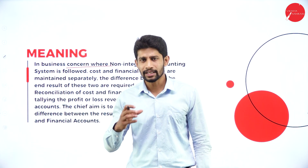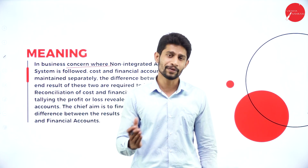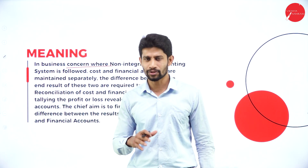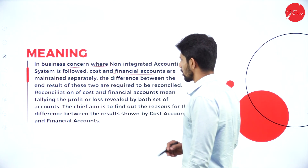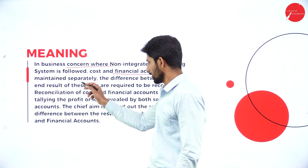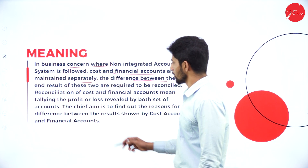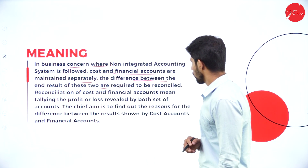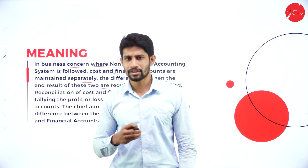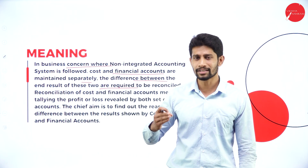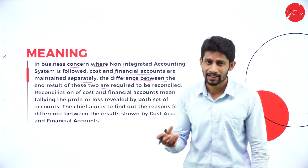For example, if you are maintaining a cost book, the cost book will be different. If you are maintaining a financial book, the financial book will be different. So it is not integrated — we are maintaining separate books. Cost and financial accounts are maintained separately. The differences between the end results of these two are required to be reconciled. You will not get the same profit in the cost book as in the financial book.